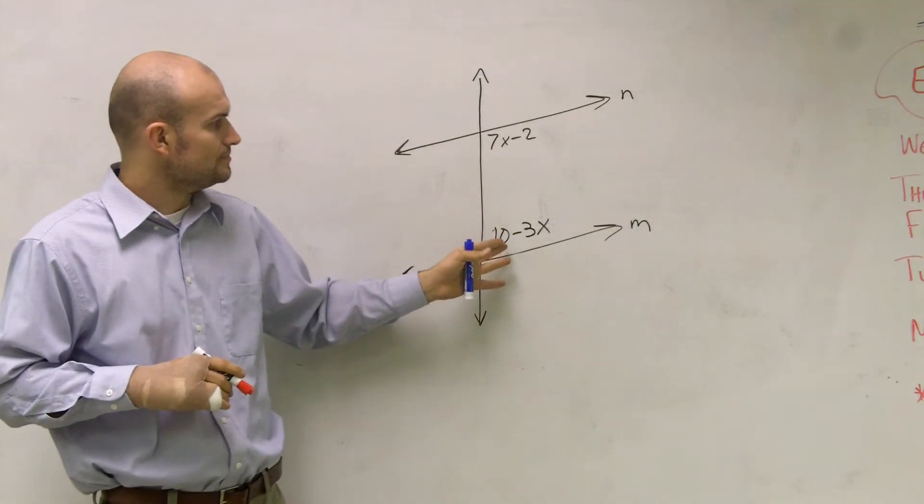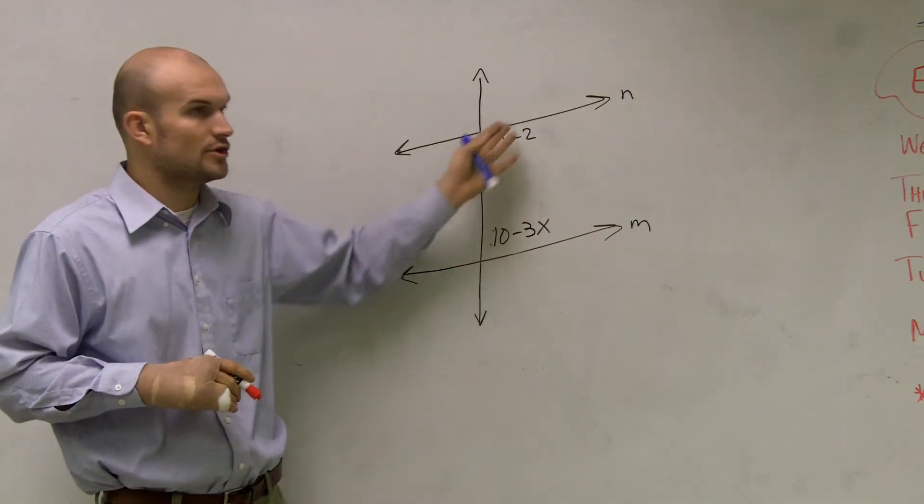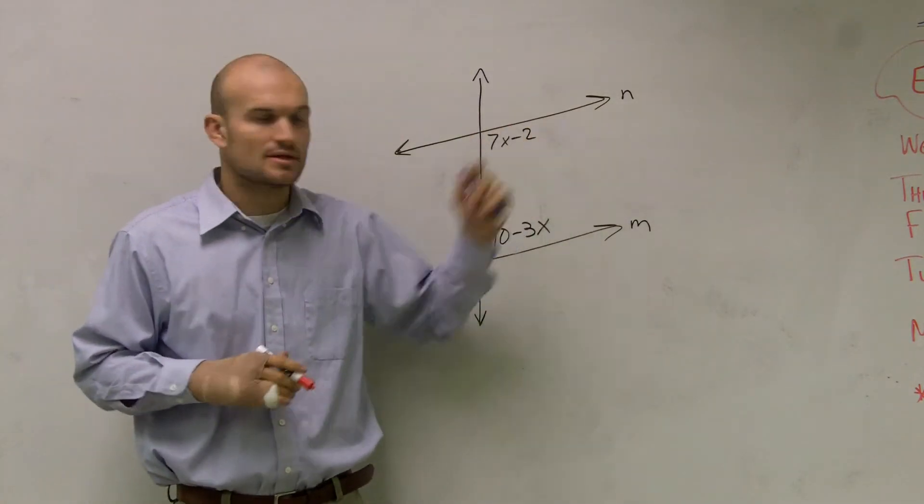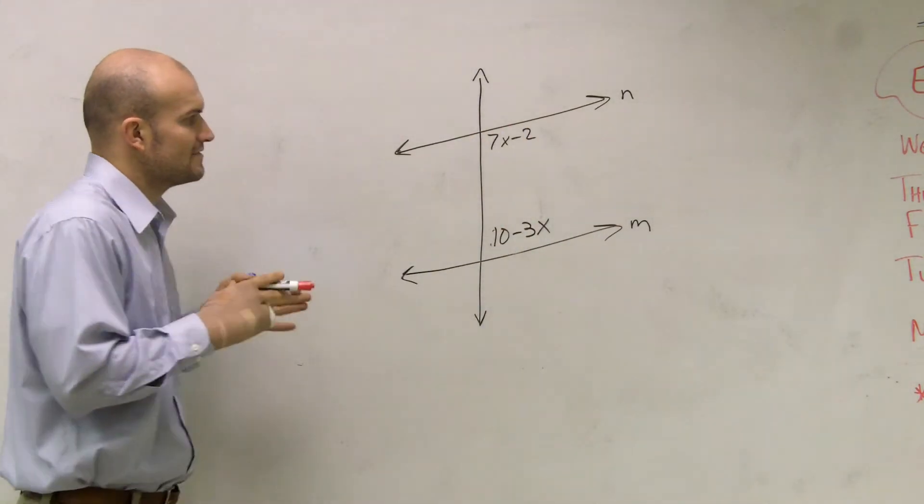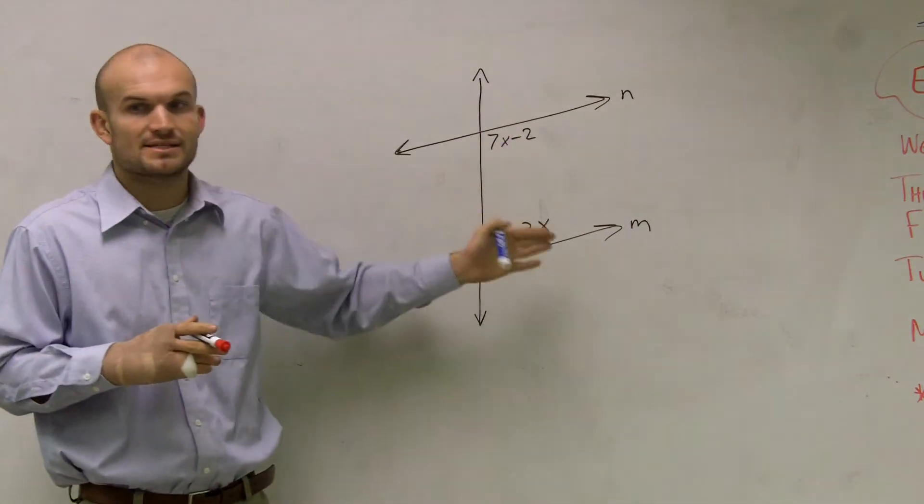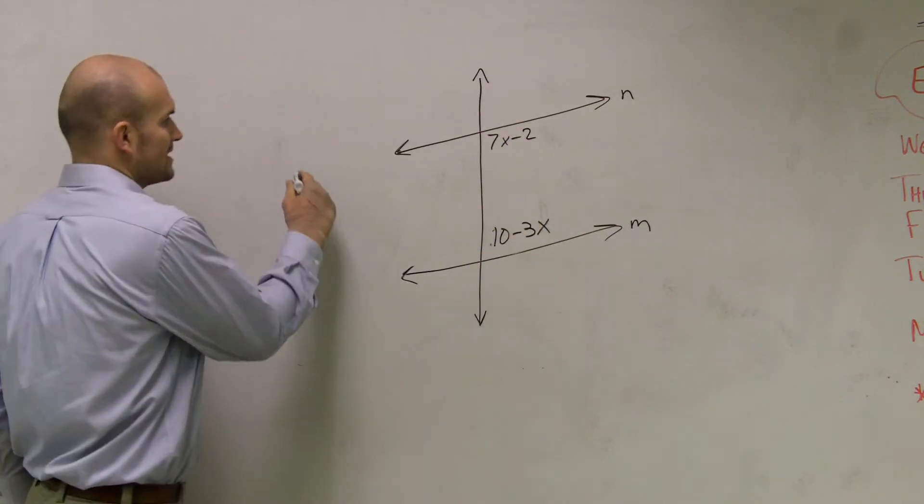Well, it's a little bit difficult here because we don't know the values of these two angles. So what I'm going to do, I need to find which value makes them equal to each other. I need to set them equal to each other.